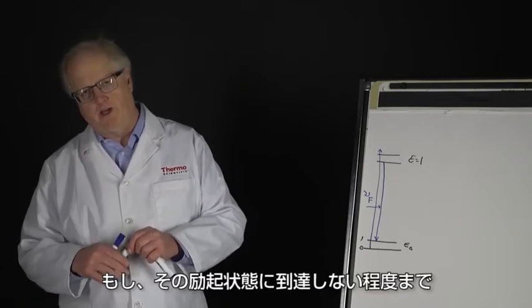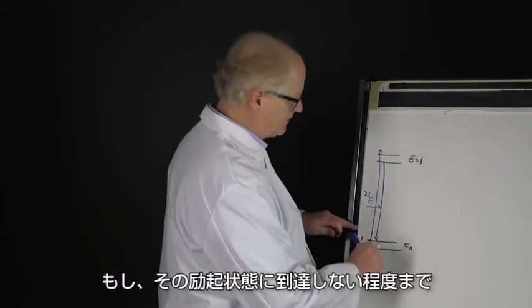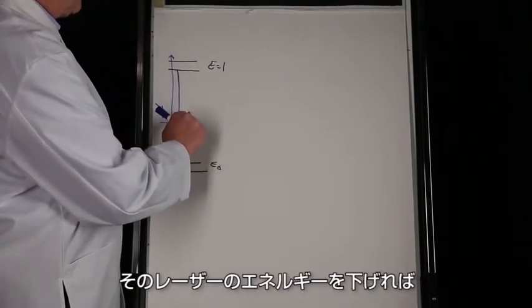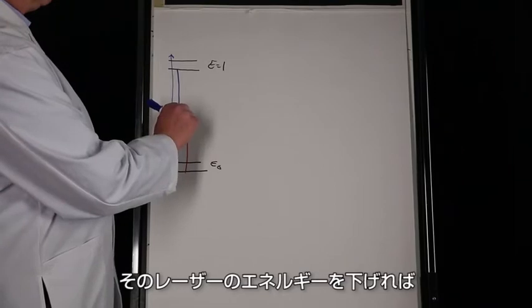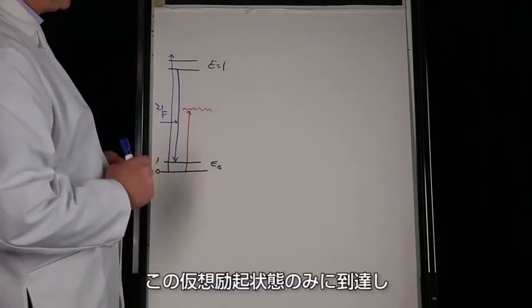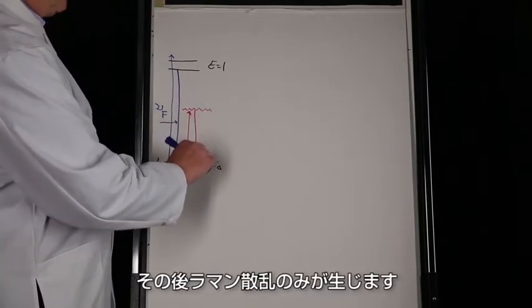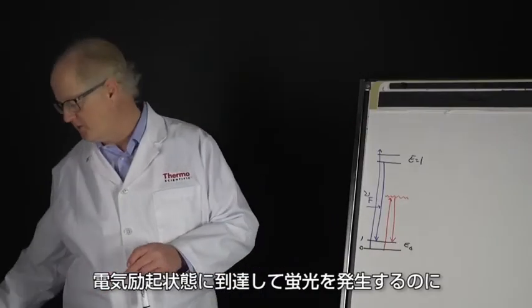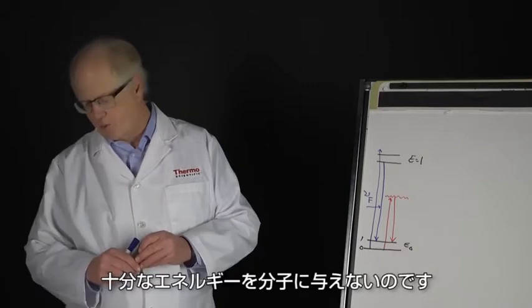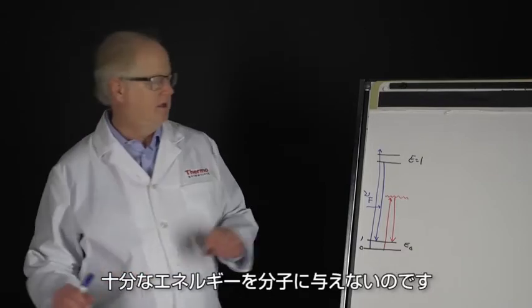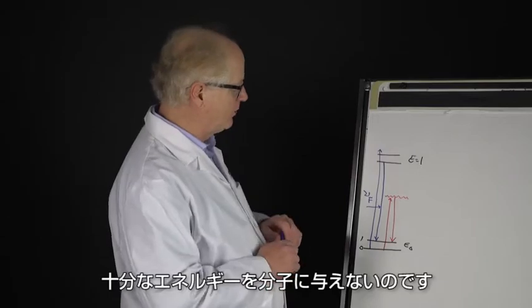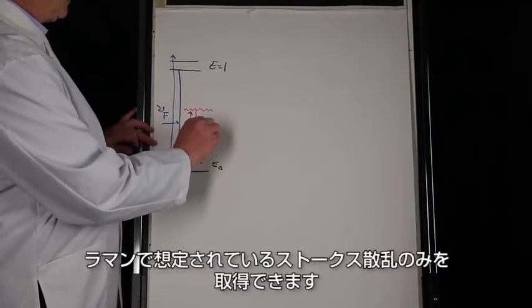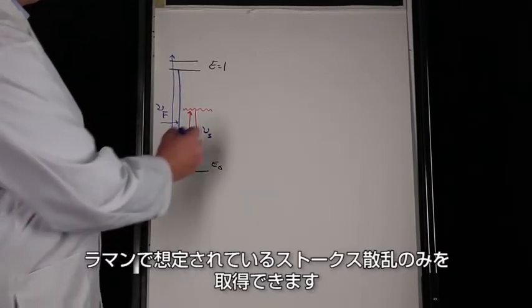What was realized was that if we lowered the energy of that laser sufficiently to the point where we didn't make it up to that excited state, we only go here to this virtual state, then we would see only the Raman scatter. You would not give the molecule sufficient energy to approach that excited electronic state and hence fluoresce. The fluorescence photon wouldn't happen, you would just have your Stokes scatter.